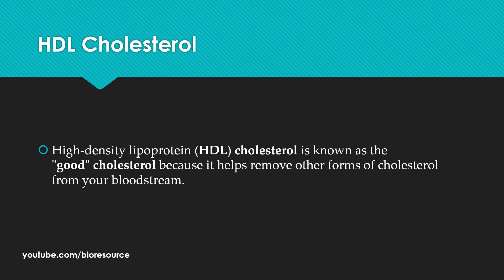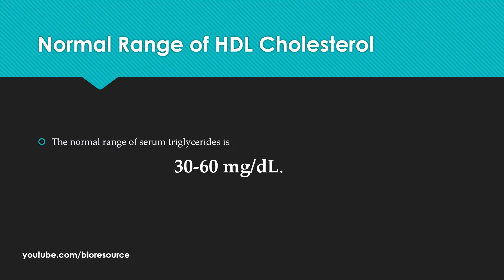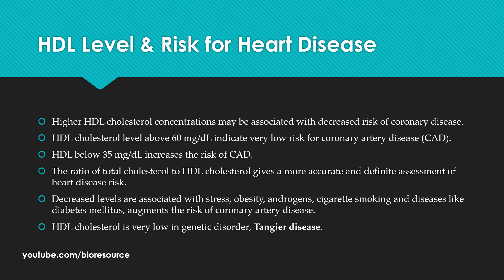Coming to the HDL cholesterol, or high-density lipoprotein cholesterol — this is known as the good cholesterol because it helps to remove other forms of cholesterol from the bloodstream. The normal range for HDL cholesterol is between 30 to 60 mg per deciliter. Higher HDL cholesterol concentration may be associated with decreased risk of coronary artery disease. If you have a high level of HDL cholesterol, this is very good for the body. An HDL cholesterol level above 60 mg per deciliter indicates very low risk.